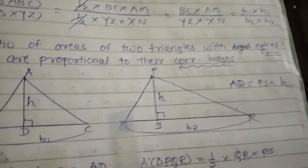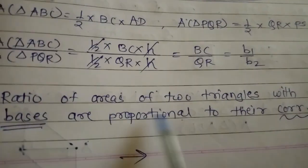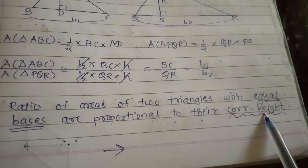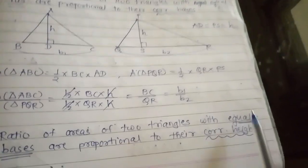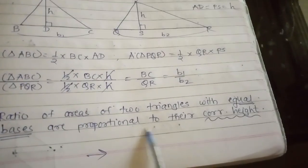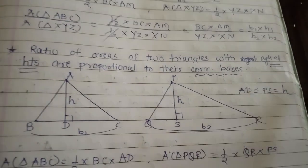The third statement: the ratio of area of two triangles with equal bases are proportional to their corresponding heights. This is the converse of the previous statement — if the heights are same, ratio is proportional to bases; if the bases are equal, ratio is proportional to their corresponding heights. See the figure.